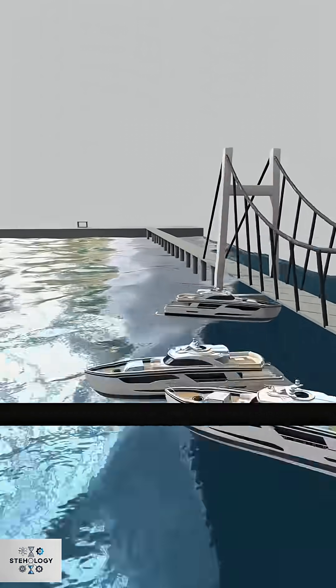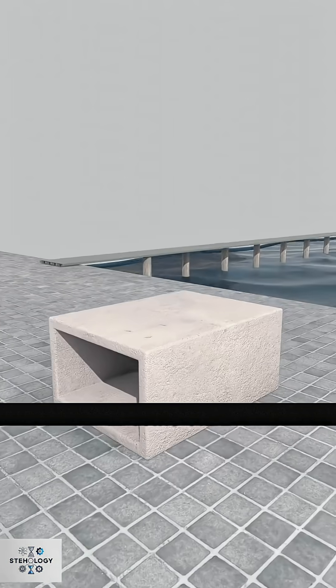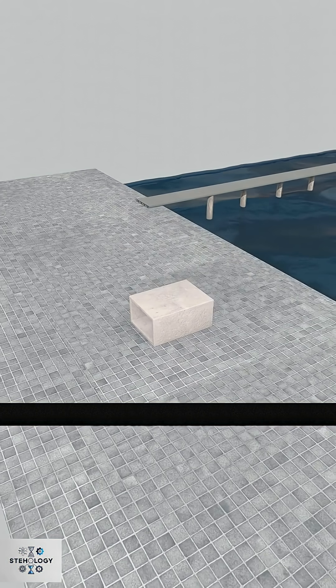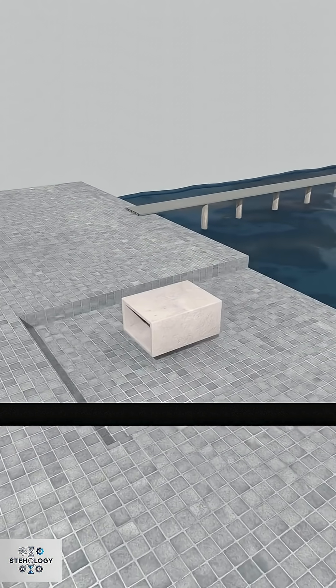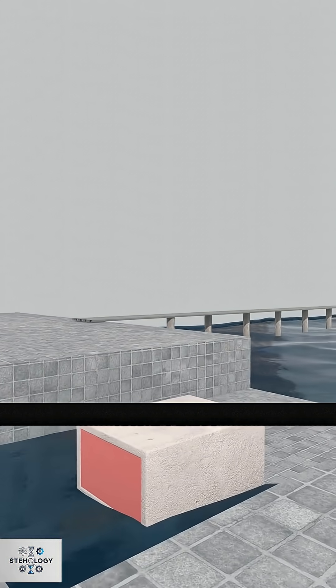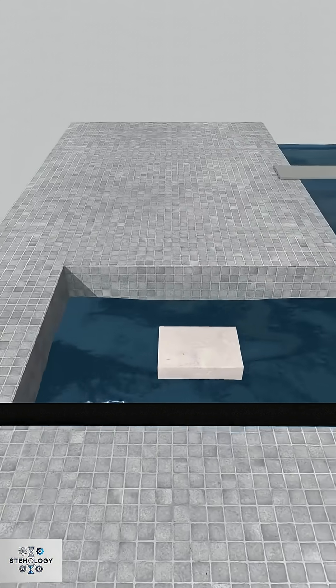The ultimate innovation for such scenarios is the immersed tunnel. This involves constructing large concrete tubes, floating them to the site by sealing and filling a pool, then sinking them into position using ballast tanks. After connecting them underwater, they are backfilled, creating a submerged passageway.